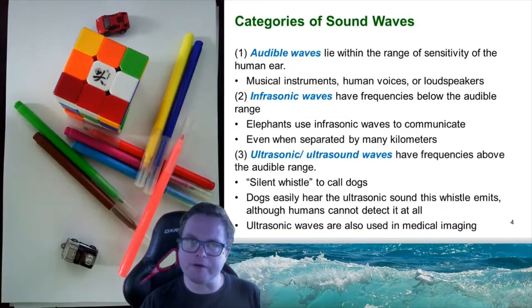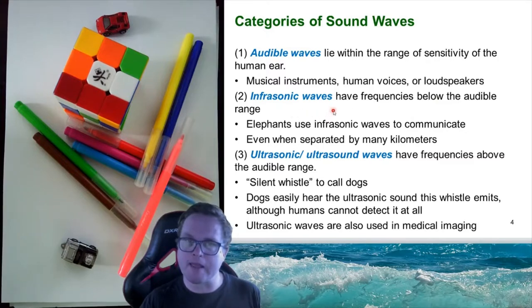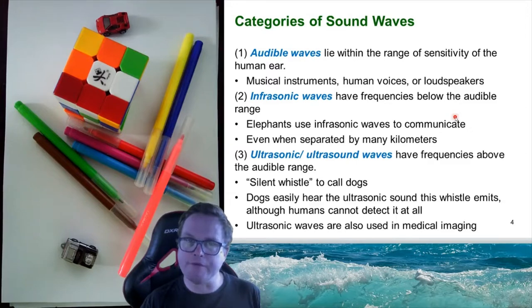There are three different kinds of sound waves. The first is audio sound waves, which lie within the sensitivity of our human ear — sounds we are able to hear, such as a musical instrument, human voice, or loudspeaker. The second type is infrasonic waves, which have frequencies below the audio range, so we're not able to hear them as humans. Examples include elephants using infrasonic waves to communicate, even over many kilometers.